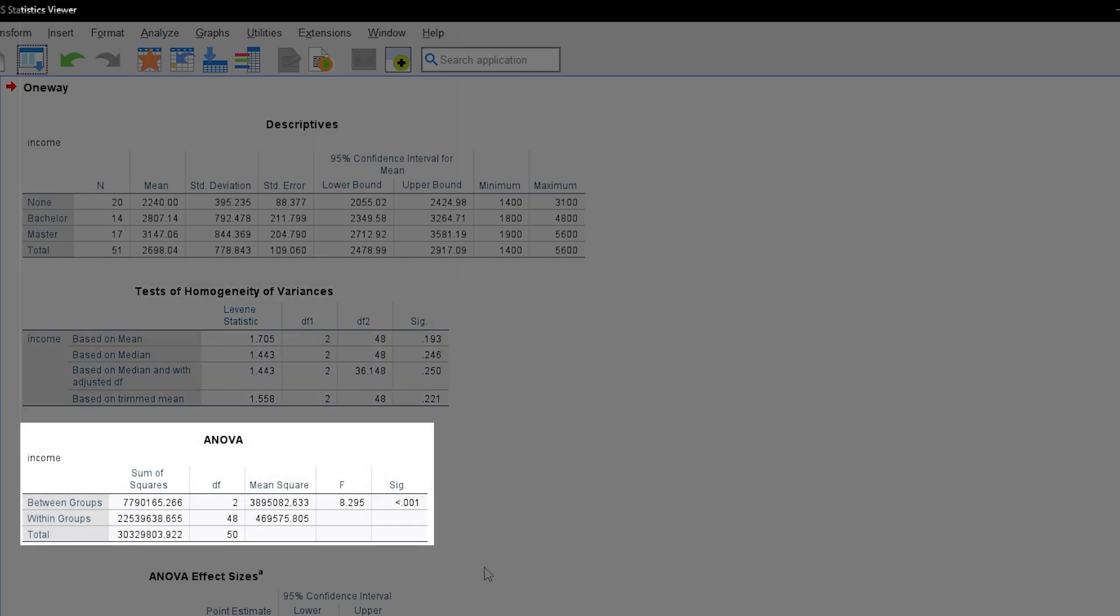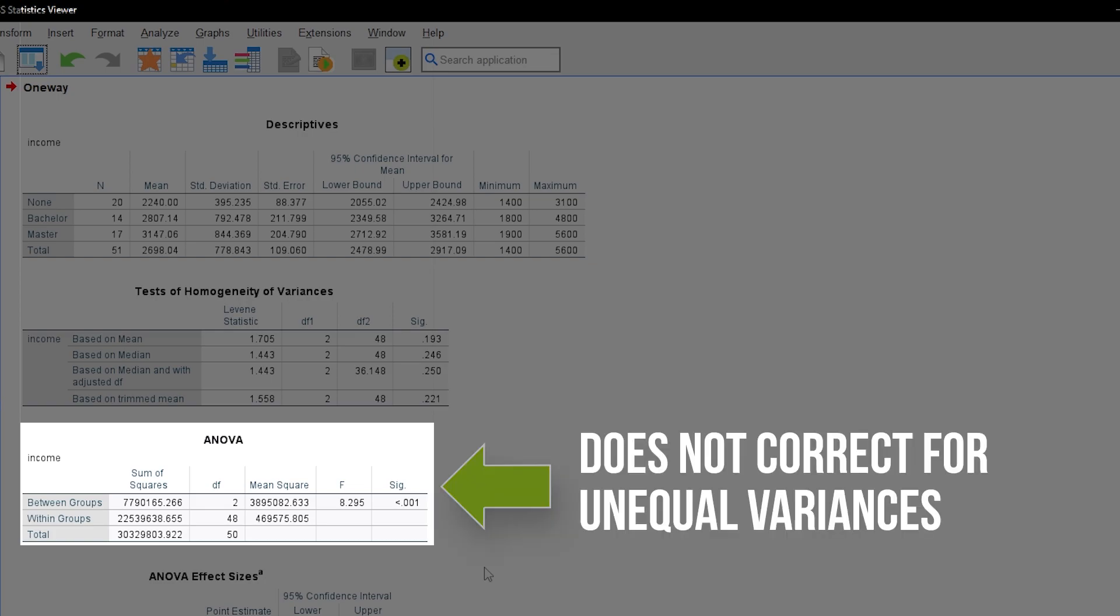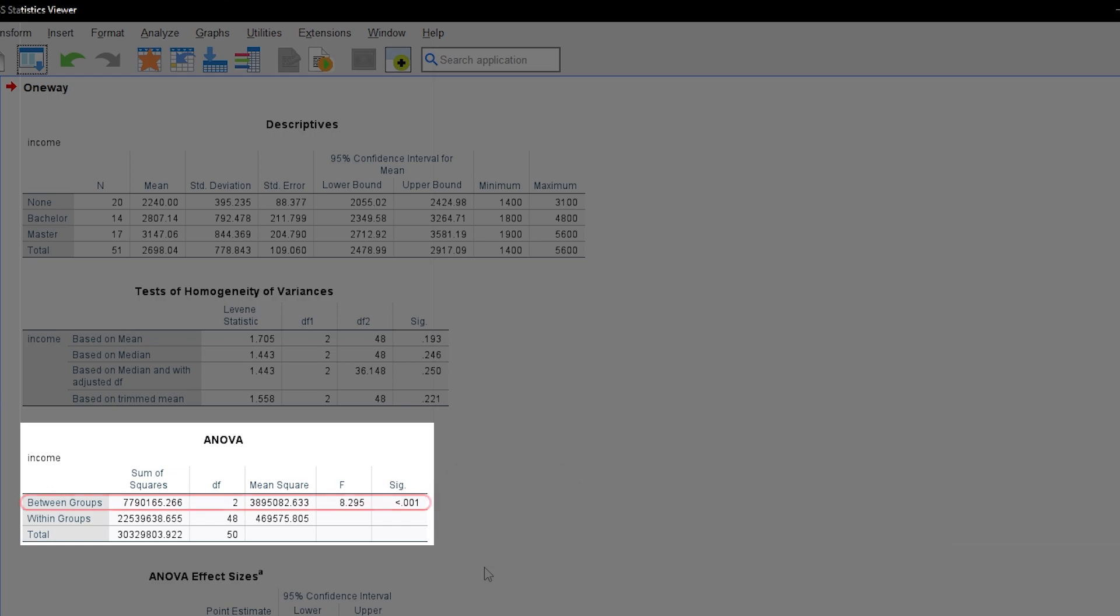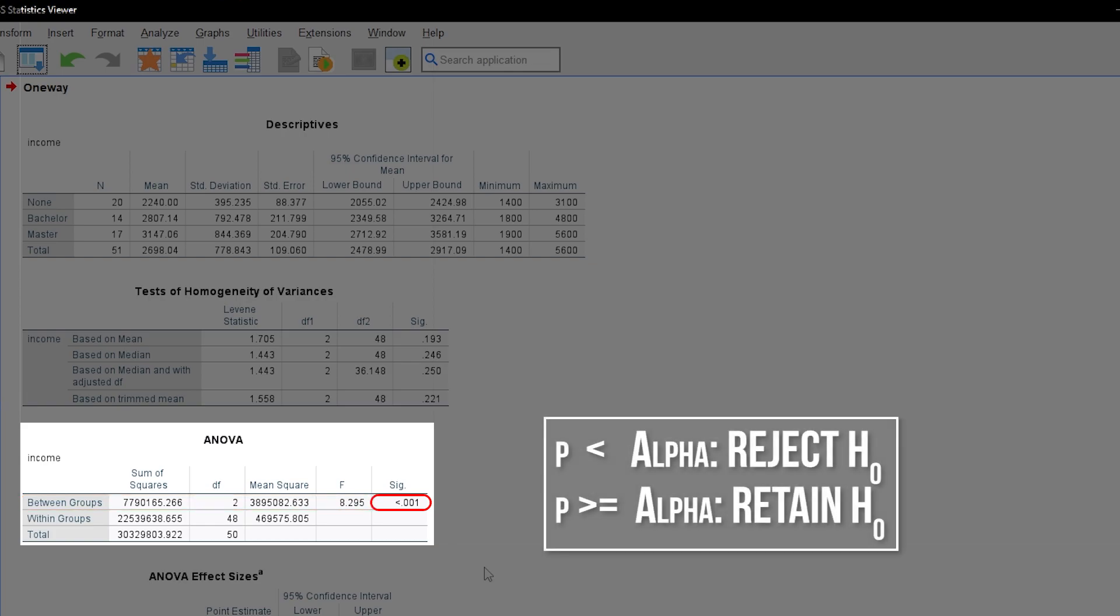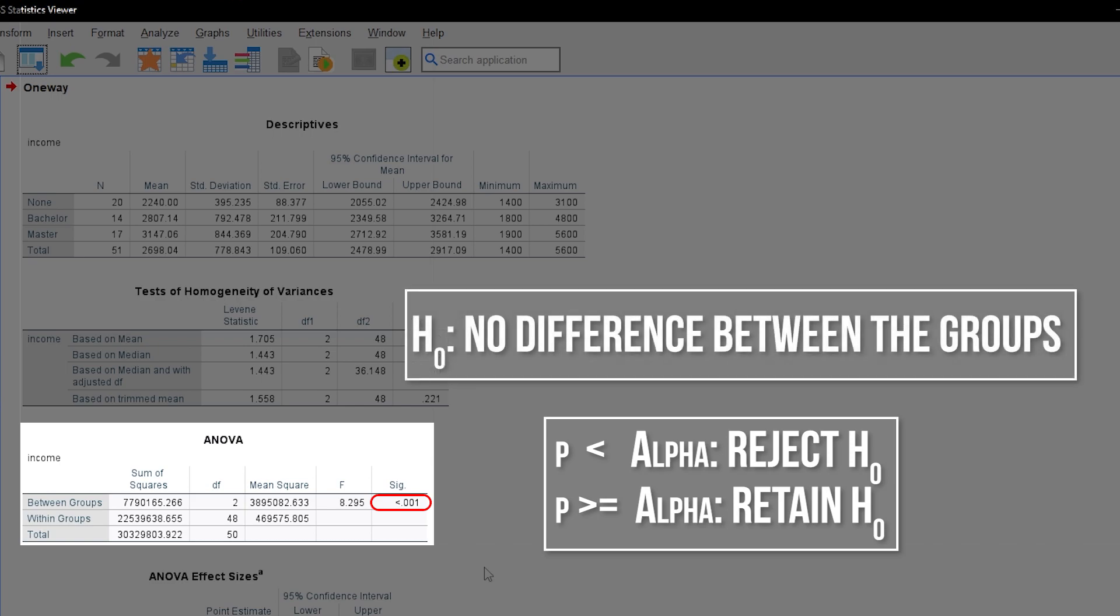Let's finally get to the ANOVA result table. Note, this is the result table that does not correct for a violation of equal variances, which I will refer to right after this. The focus is on the between groups line of the table, since you are testing a between subject or between groups factor. The p-value is in the last column and smaller than any alpha level, hinting a difference between the groups. This means, for my example, that the three groups with different degrees have different mean incomes.